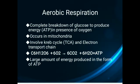Now we will talk about aerobic respiration. The respiration which occurs in the presence of oxygen is known as aerobic respiration. In aerobic respiration, there is complete breakdown of glucose to produce ATP in the presence of oxygen. Aerobic respiration occurs in the mitochondria and involves the Krebs cycle and the electron transport chain. This equation shows how glucose is converted into carbon dioxide, water, and ATP in the presence of oxygen, producing a large amount of energy.